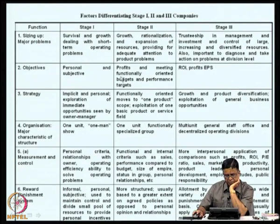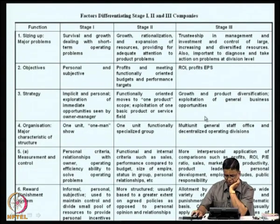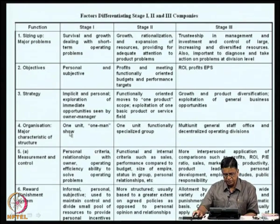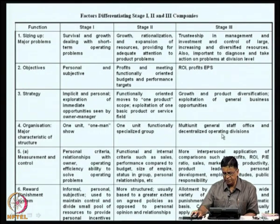Stage 1 is mostly entrepreneurial; stage 2 has functional areas coming into focus; stage 3, a real company operation comes into focus. Whereas in stage 1 it can be a one-unit, one-man show, stage 2 it can be one unit with a functionally specialized group, whereas in stage 3 it can be multi-unit with a general staff office and decentralized operations.